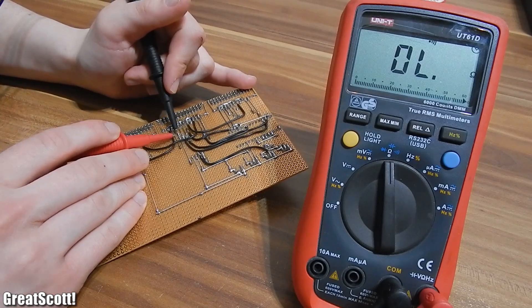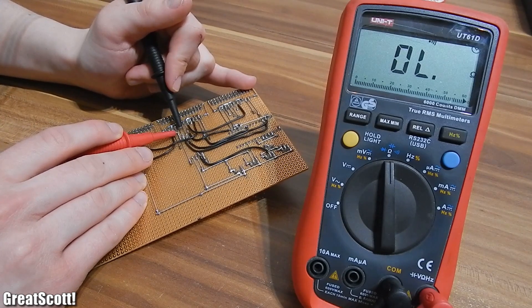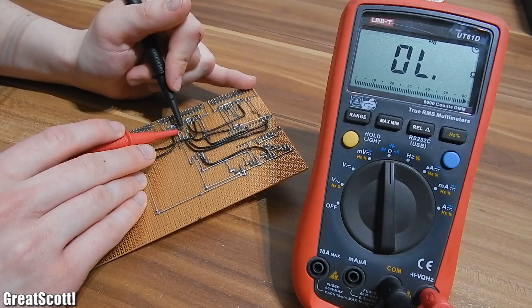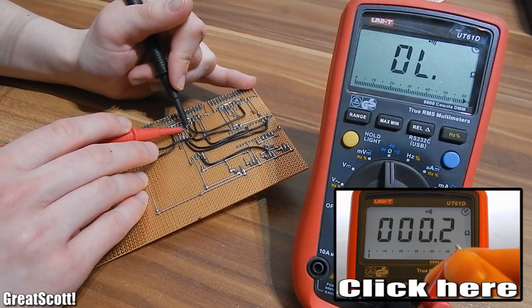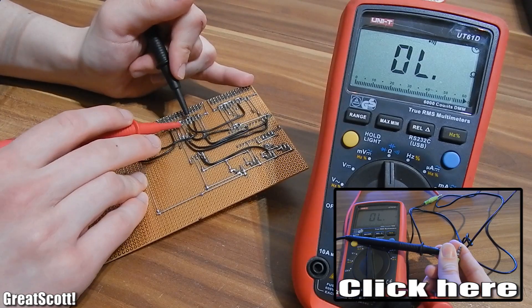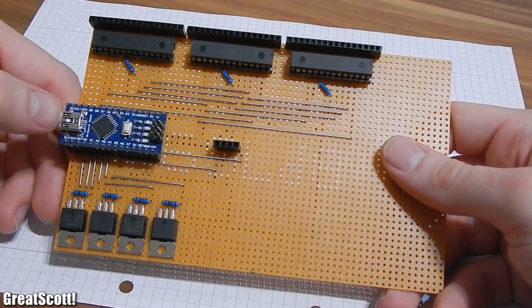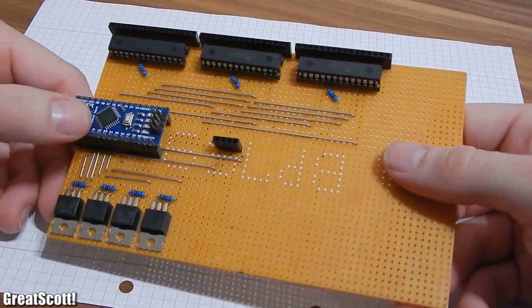Always check all your connections twice and be sure to use a multimeter with its continuity function to check for shorts. If you don't know what I'm talking about, then take a look at my multimeter video. Okay, PCB is done. Almost.